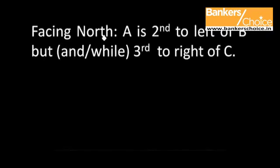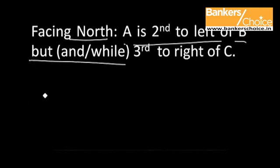In case of persons facing north, if the statement is A is second to the left of B but or and or while third to the right of C, the persons A, B, C can be placed as follows.